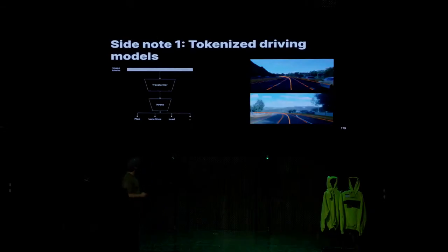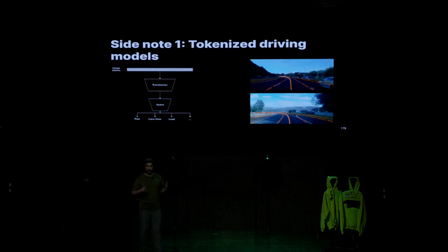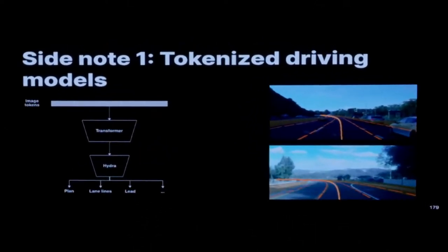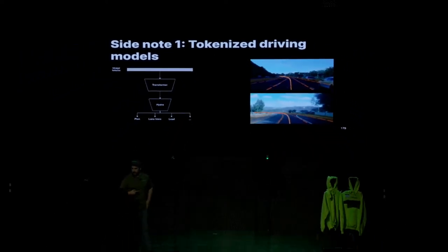Another side note: these images go back to image space, which is good for debugging, but in order to train a driving model, we actually don't need to go back to image space. You can train the model directly on the tokens, which is interesting. These tokens have everything you need to know to drive. So instead of a convolutional neural network that takes in an image and predicts a plan, now you have a transformer. It predicts the lane lines, the plan, and reasonable outputs — all directly on tokens.